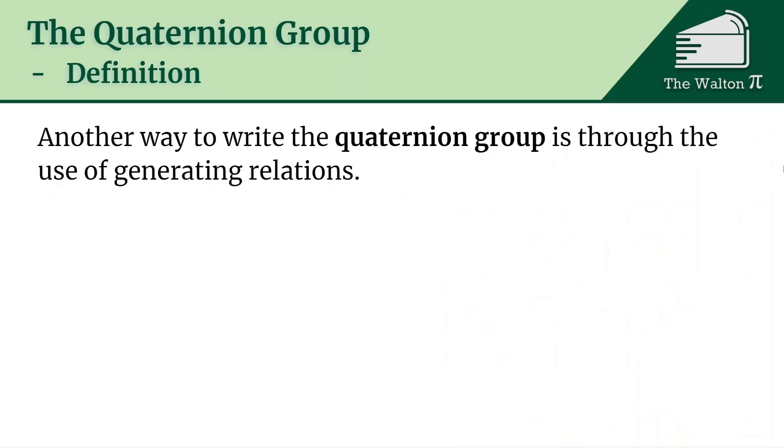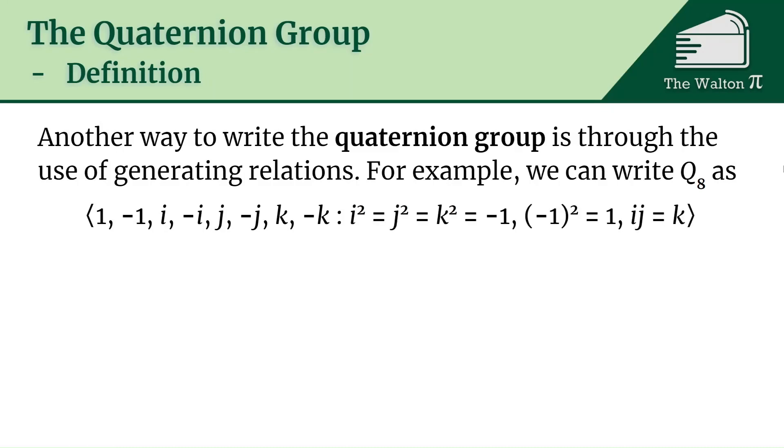So another way that we can write the quaternion group is through the use of generating relations. For example, we can write Q8 as the set generated by 1, negative 1, i, negative i, j, negative j, k, and negative k, such that i squared is j squared is k squared is negative 1, negative 1 squared is 1, and i times j equals k.